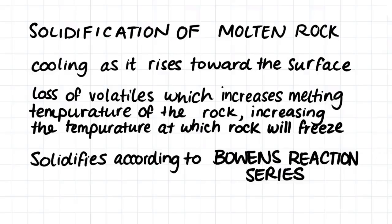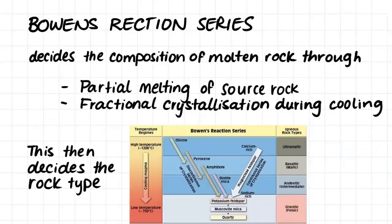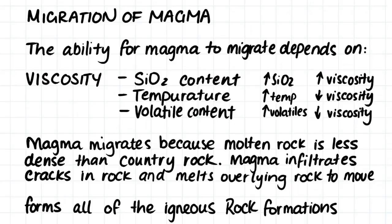The temperature at which the rock will begin to solidify depends on its composition, and it does this according to Bowen's reaction series. If you're not sure about Bowen's reaction series or the different types of magma composition, go and watch the last two videos in the previous section of this course. Briefly, Bowen's reaction series decides the composition of molten rock — what sort of partial melting of the source rock will occur and the fractional crystallization that will occur during cooling — which then decides the rock type that will form.